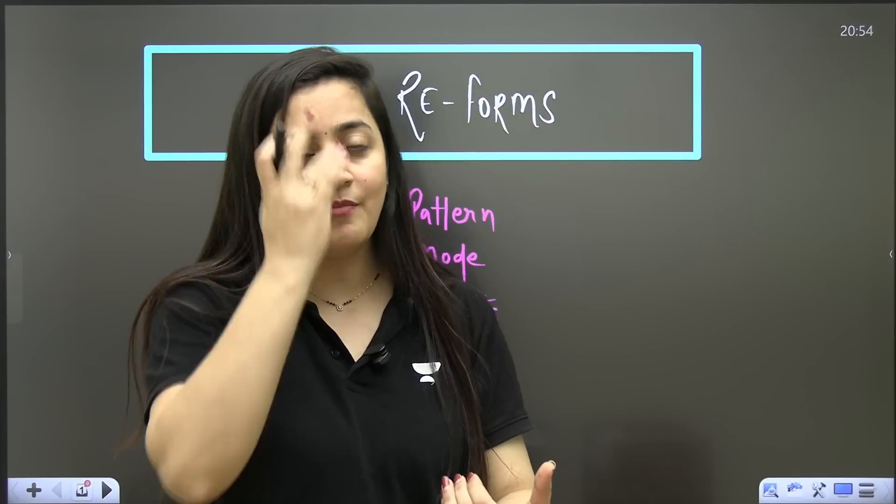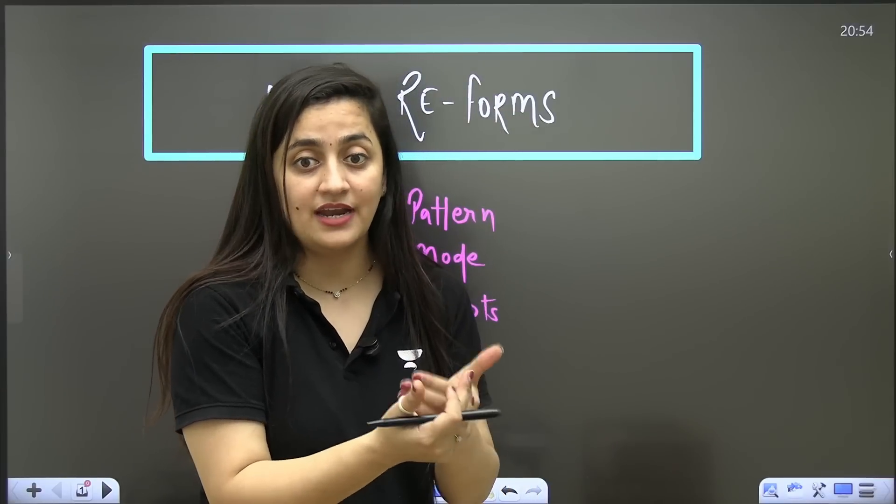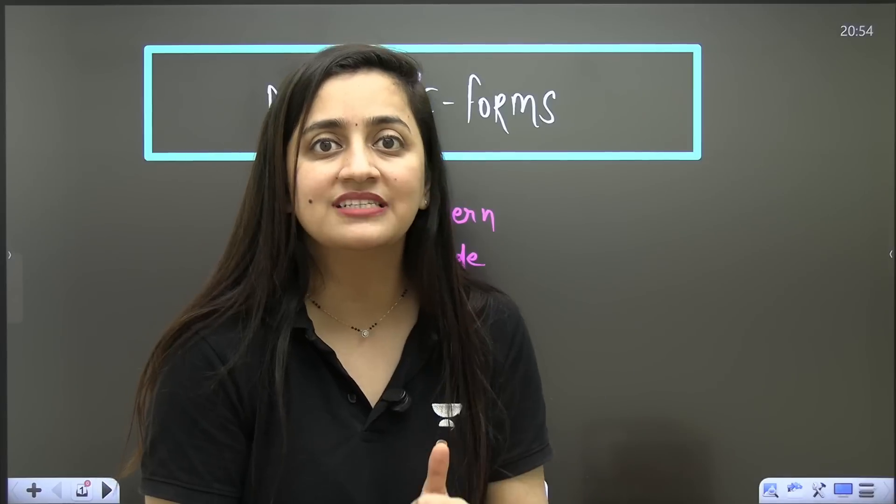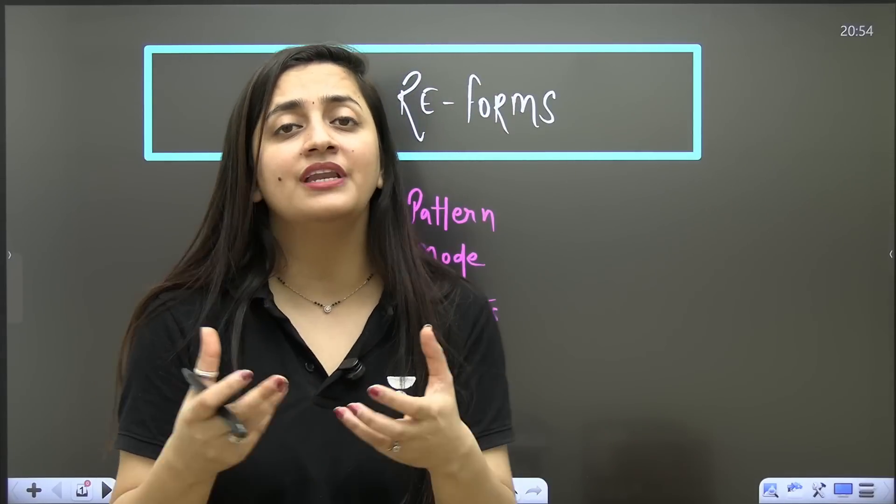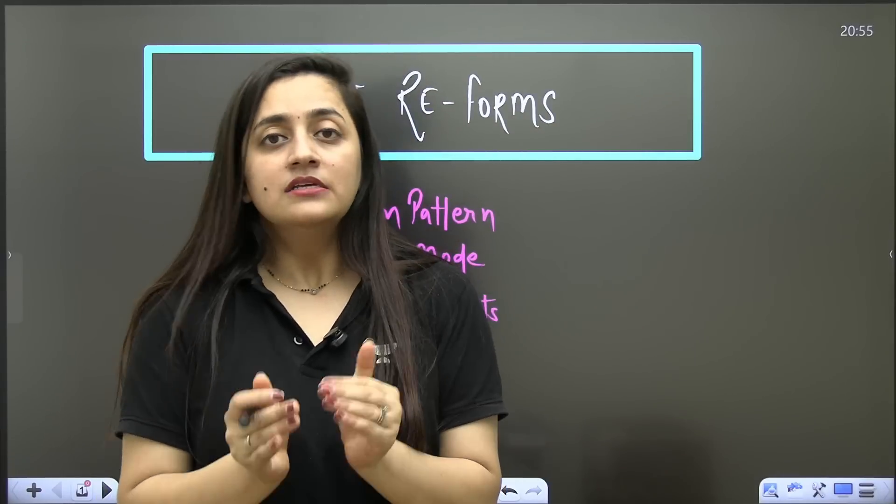When the result came out, because of the grace marks, some students were scoring 719 marks, some students were scoring 718 marks. Many students scored 720 out of 720 because of the controversial question in physics.